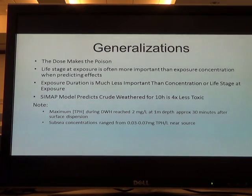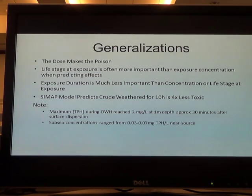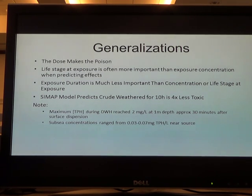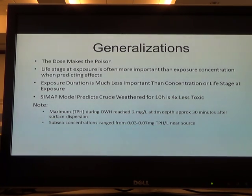There are three really key fundamental aspects I want to share. One, the fundamental mantra in toxicology is the dose makes the poison — how much of a contaminant you're exposed to generally determines the results. If you're exposed to a higher concentration, you're more likely to have detrimental effects, though that's not always the case. When an organism is exposed — their life stage — is way more important than how much they're exposed to. We talked about sperm and eggs being extremely sensitive, the egg right after fertilization being extremely sensitive, and as soon as that organism hatches, they're extremely sensitive.